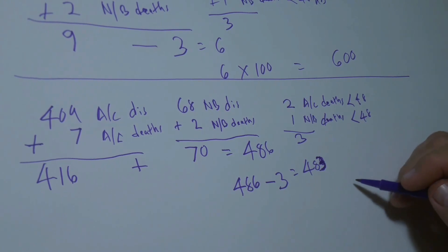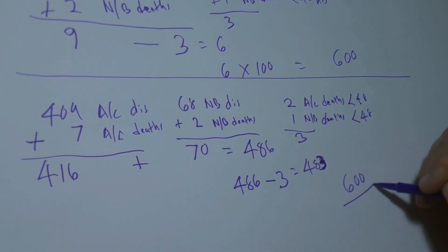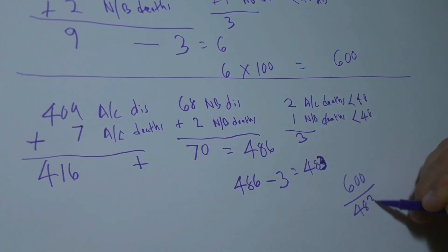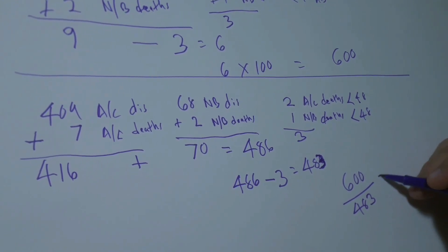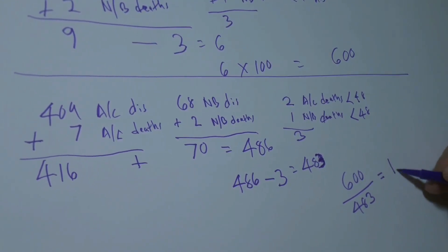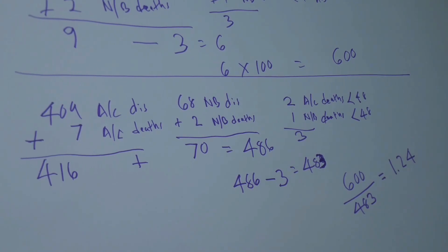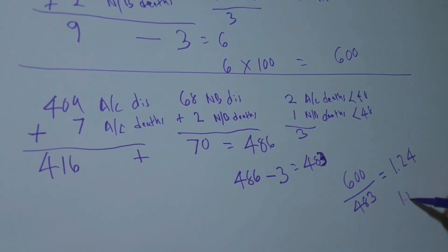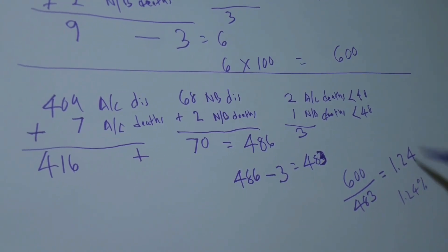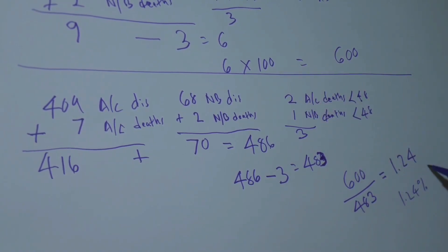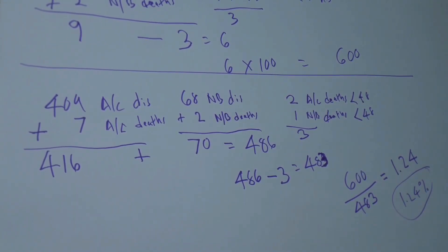Our numerator is 600 and our denominator is 483. We divide 600 by 483 and get 1.24. Remember that's a percentage, so it's 1.24% — we know it's a percent because we already multiplied by 100. That's how we calculate the net hospital death rate. If you subscribe to this channel you can find other helpful mathematical videos. Thank you.